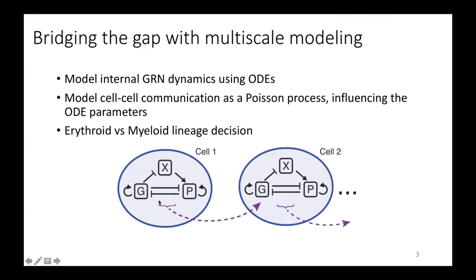we model the gene regulatory network that dictates this erythroid myeloid lineage decision, and we do so using ordinary differential equations. And then on a different time scale, following a Poisson process, signals are sent between cells, and these signals influence the parameters of the internal ODE system.